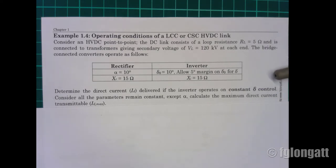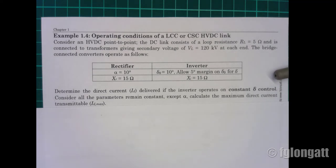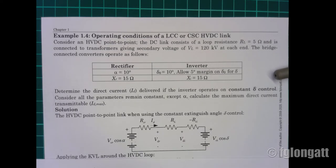The questions are: first, determine the direct current I_d delivered if the converter operates under constant delta control. Second, considering all parameters remain constant except alpha, calculate the maximum direct current that can be transmitted using this system.